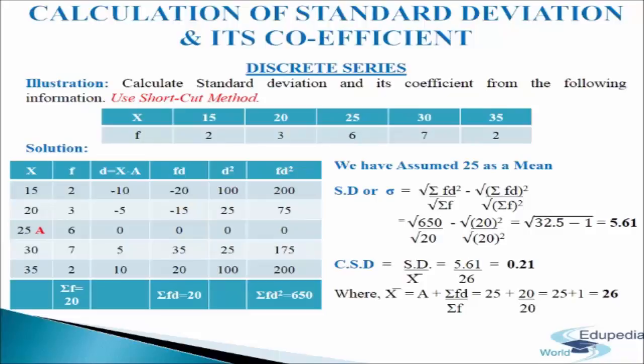In the next column we write d square — squaring the values of d. Minus 10 squared is 100; minus 5 squared is 25; 0 squared is 0; 5 squared is 25; 10 squared is 100. In the last column we multiply frequency with d square: 2 into 100 gives 200; 3 into 25 gives 75; 6 into 0 gives 0; 7 into 25 gives 175; 2 into 100 gives 200. Adding up gives sigma fd square equals 650.